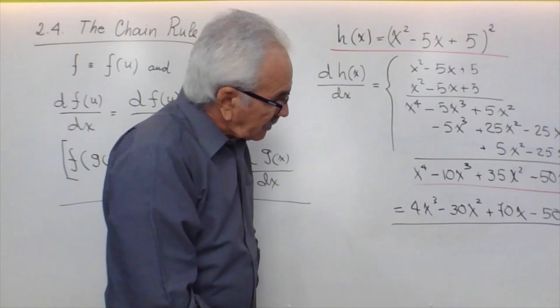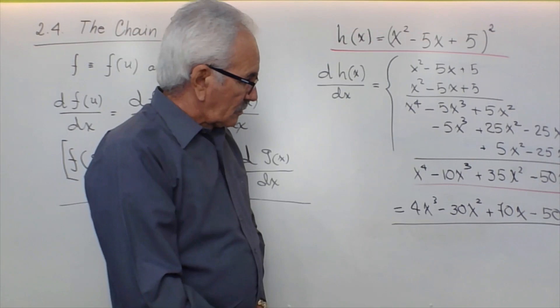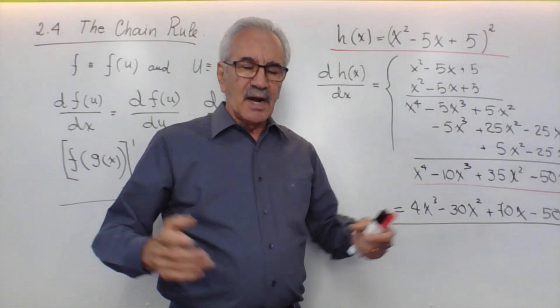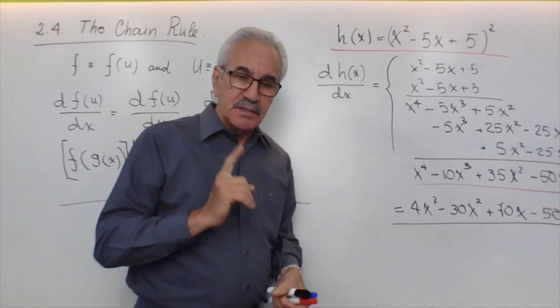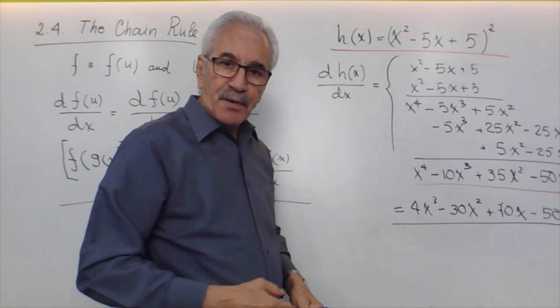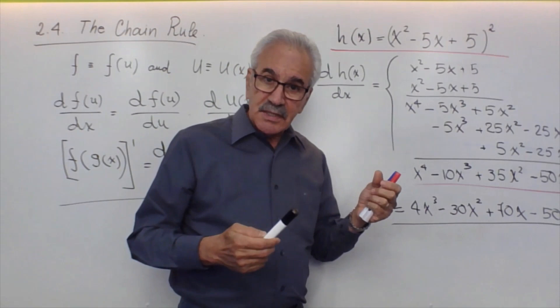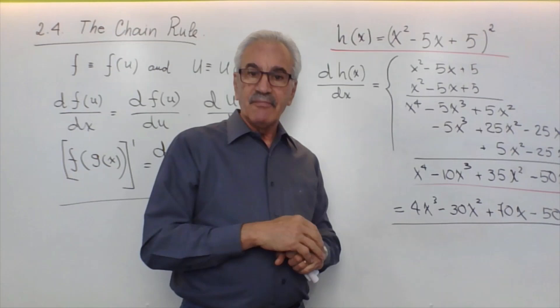If we want the result in more compact form, we can factor. However, it's not easy — we have to apply the factor theorem and the remainder theorem, which is a very large amount of work. Now let's see how we proceed using the chain rule instead, which lets us solve this problem very quickly.